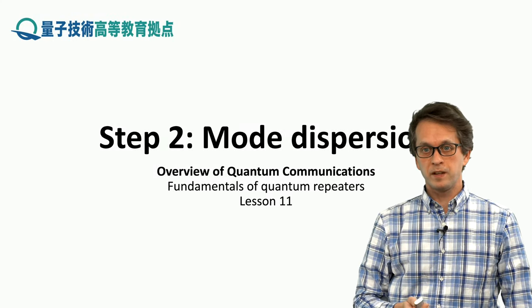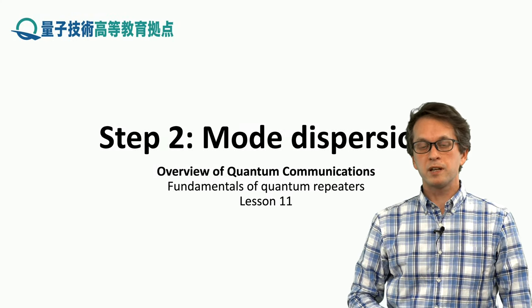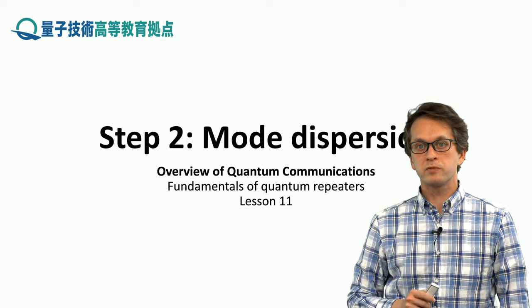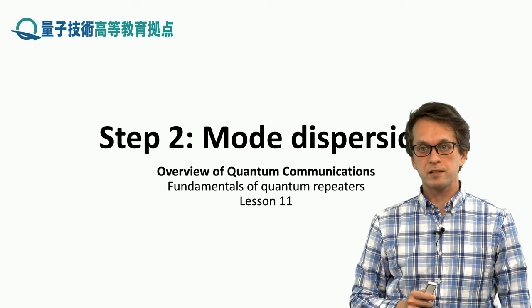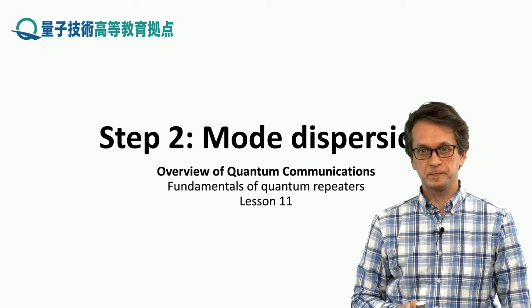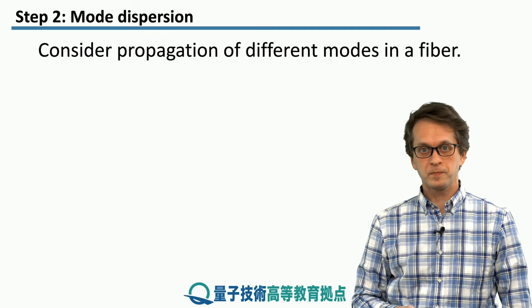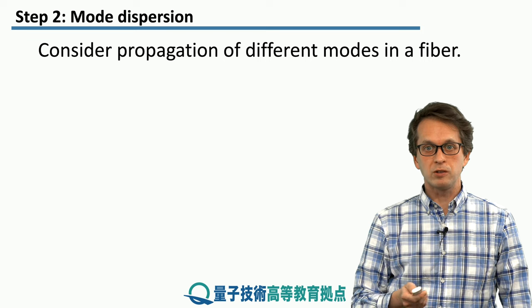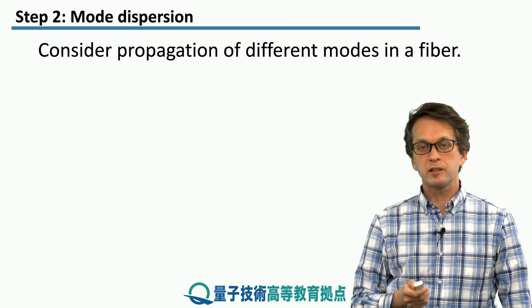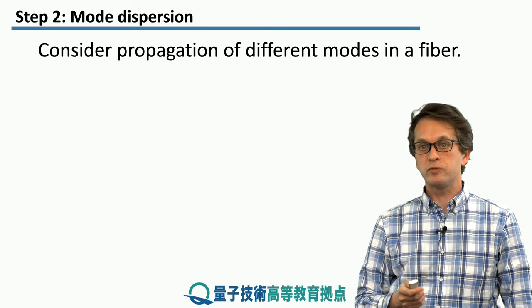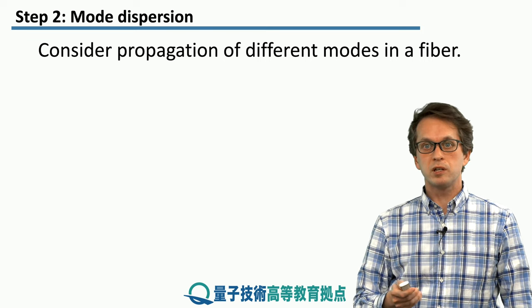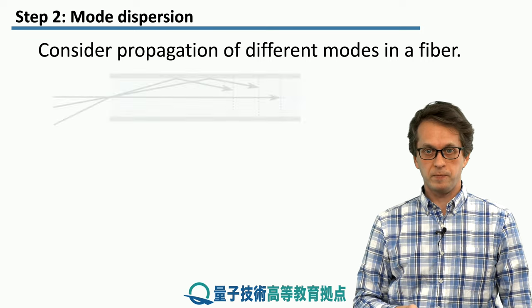Mode dispersion is our first source of losses in the fiber that we're going to consider. Let's consider the propagation of different modes in a multimode fiber.